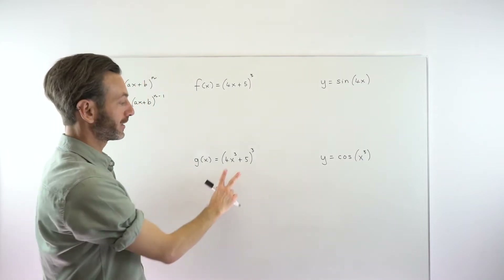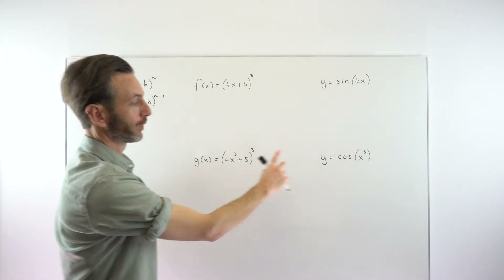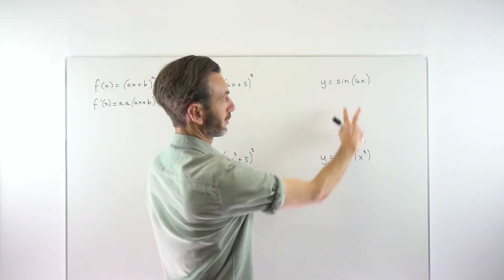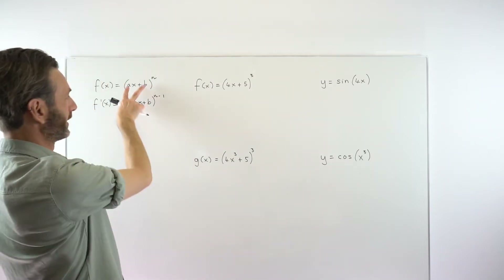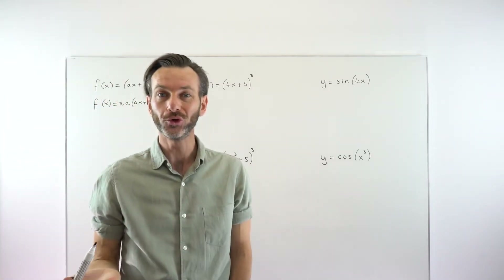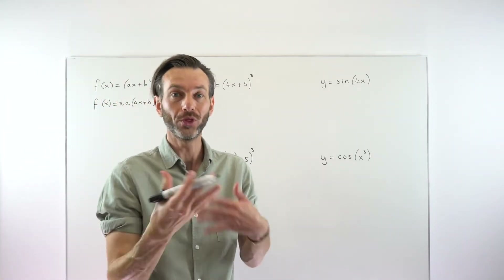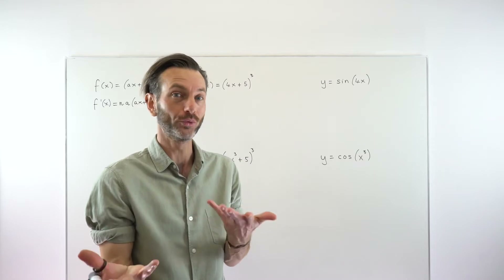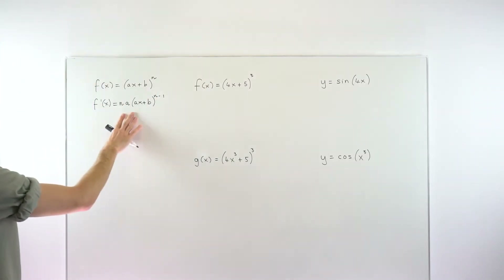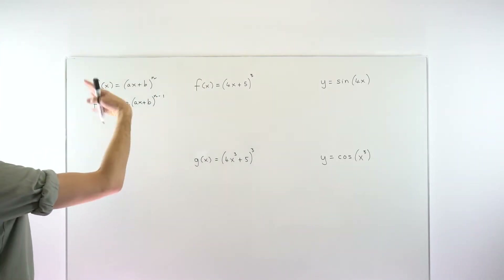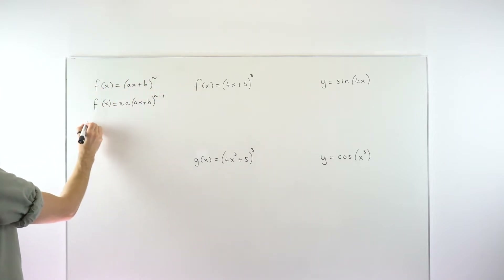But when you then get to something slightly different, or you get to trigonometric functions which look completely different, students don't know what to do. They've reached the limit of what their version of the chain rule will tell them. That version is applicable but in very limited scenarios, so I don't recommend that you learn it as a rule.